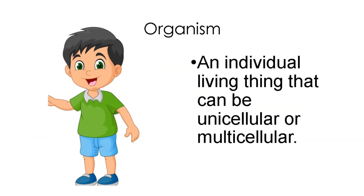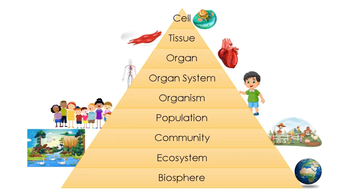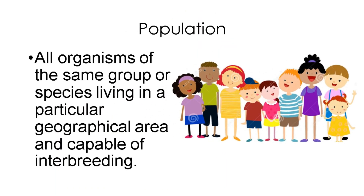Organism is an individual living thing that can be unicellular or multicellular, like us humans. When all organisms of the same group or species living in a particular geographical area and capable of interbreeding, that is called population — like a population of people, or a pride of lions, or a parliament of owls.